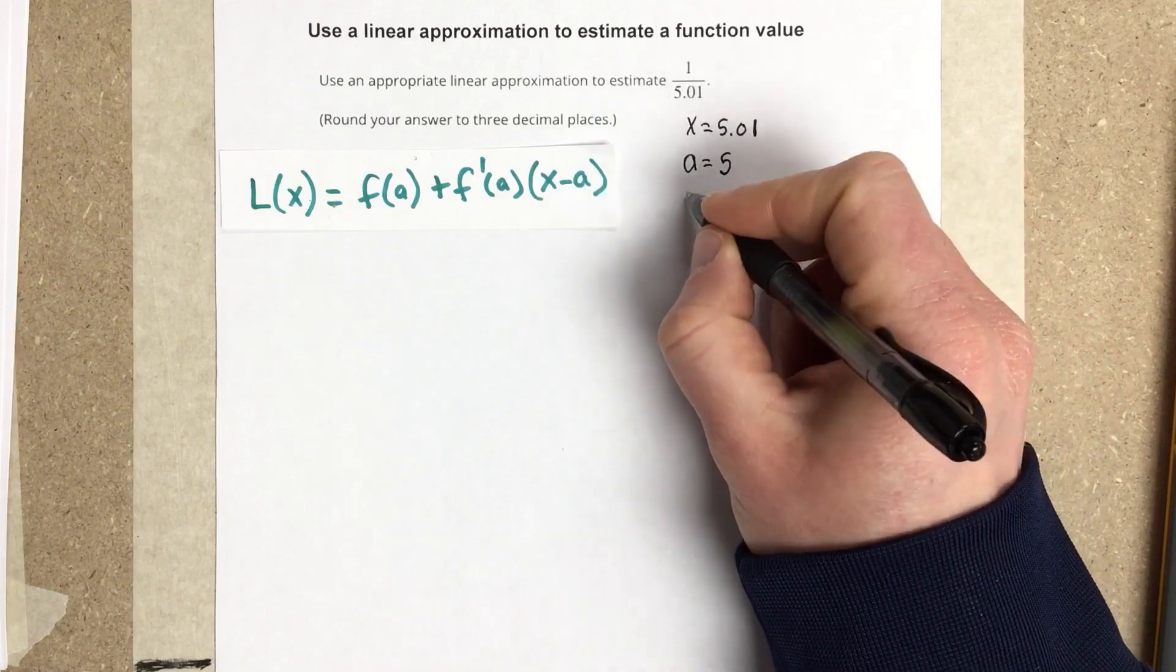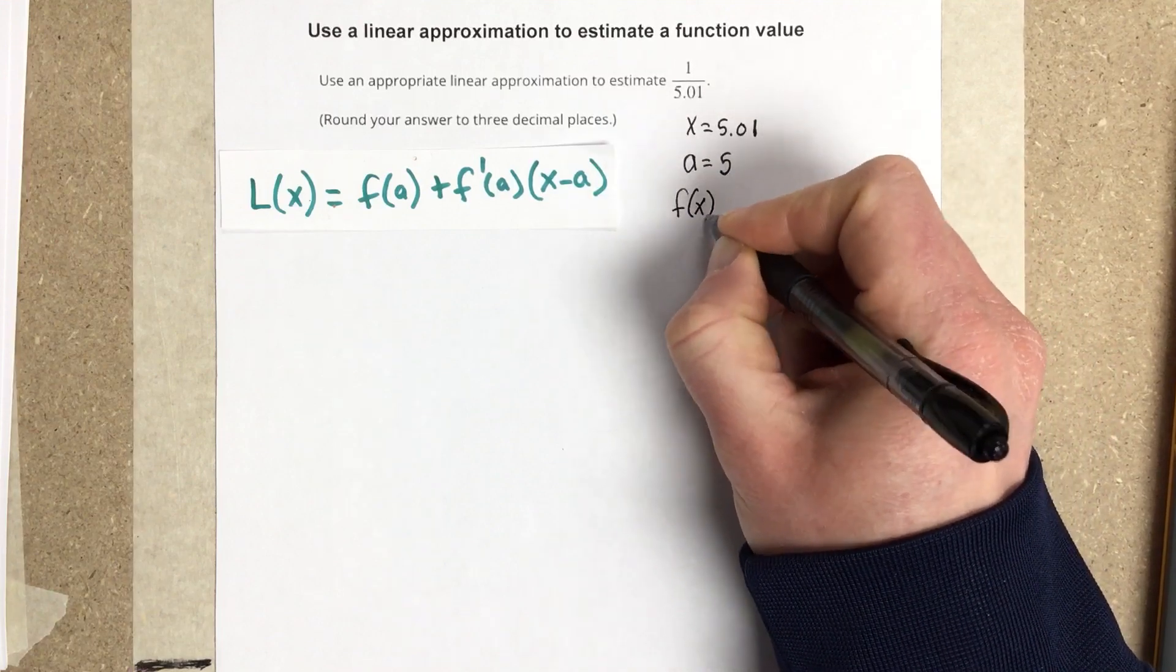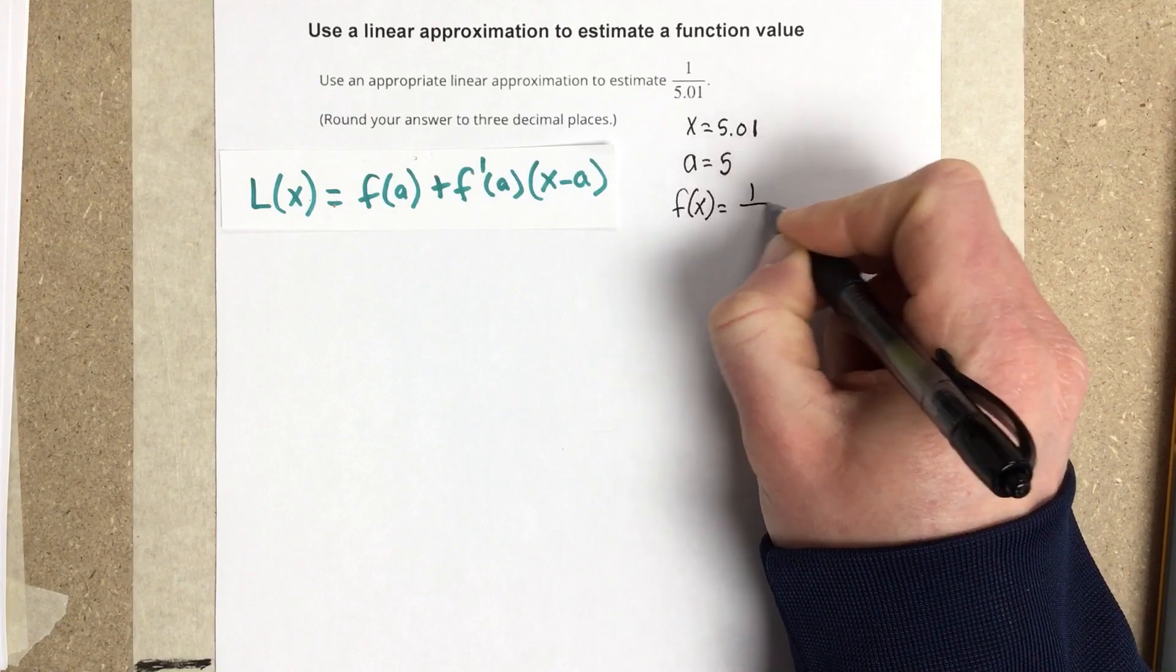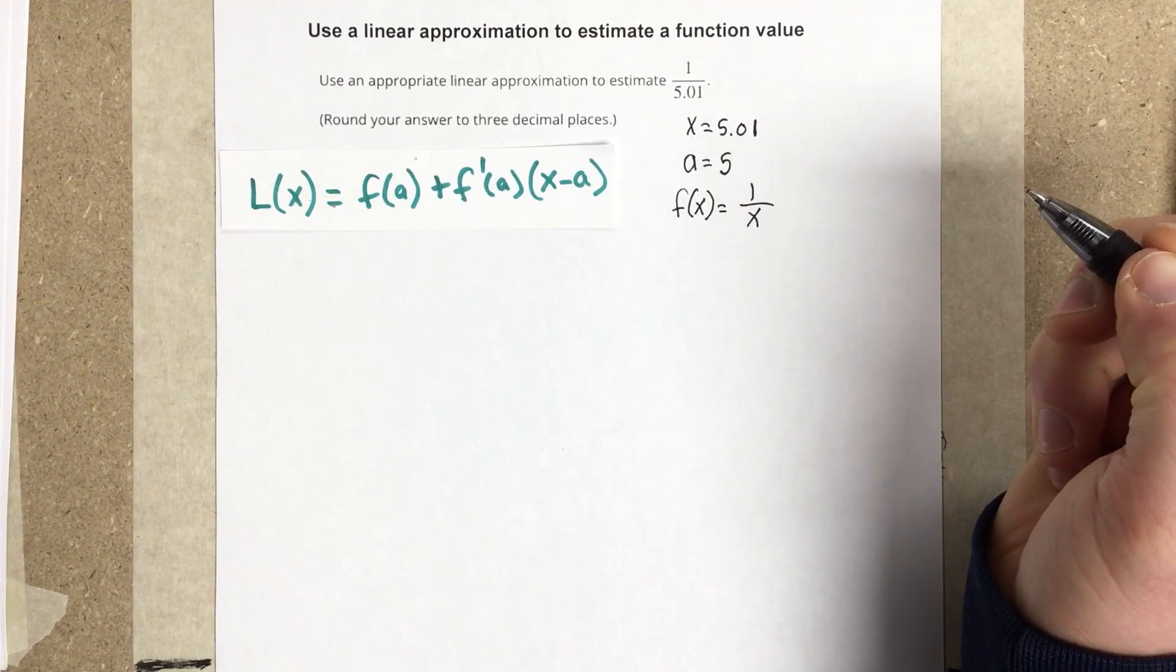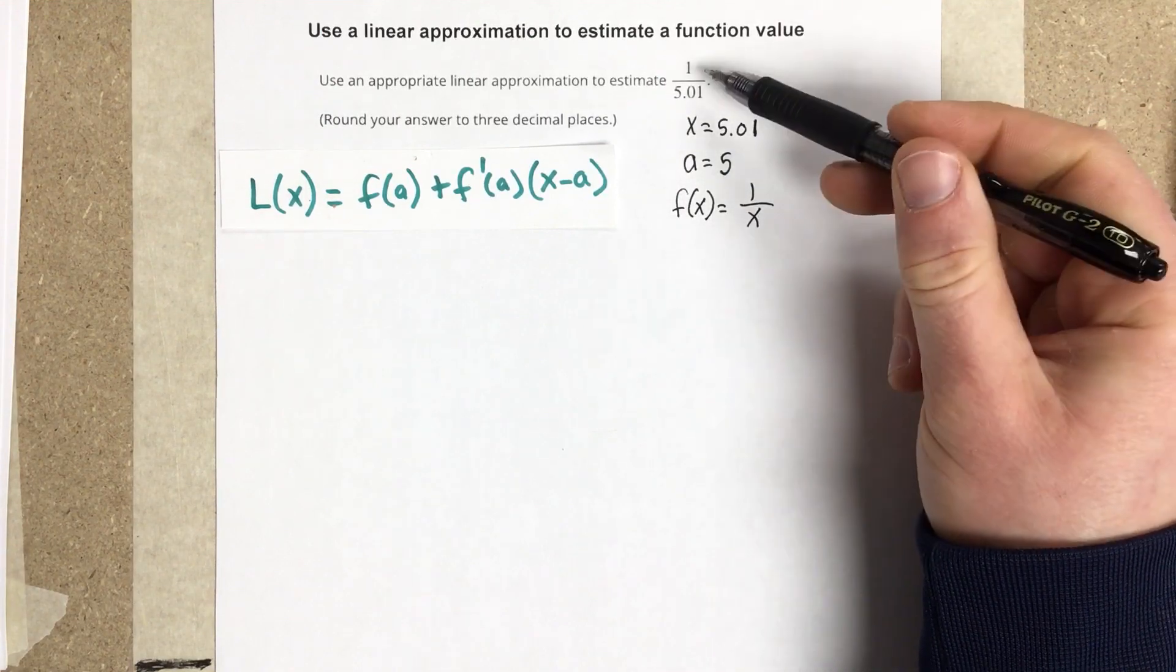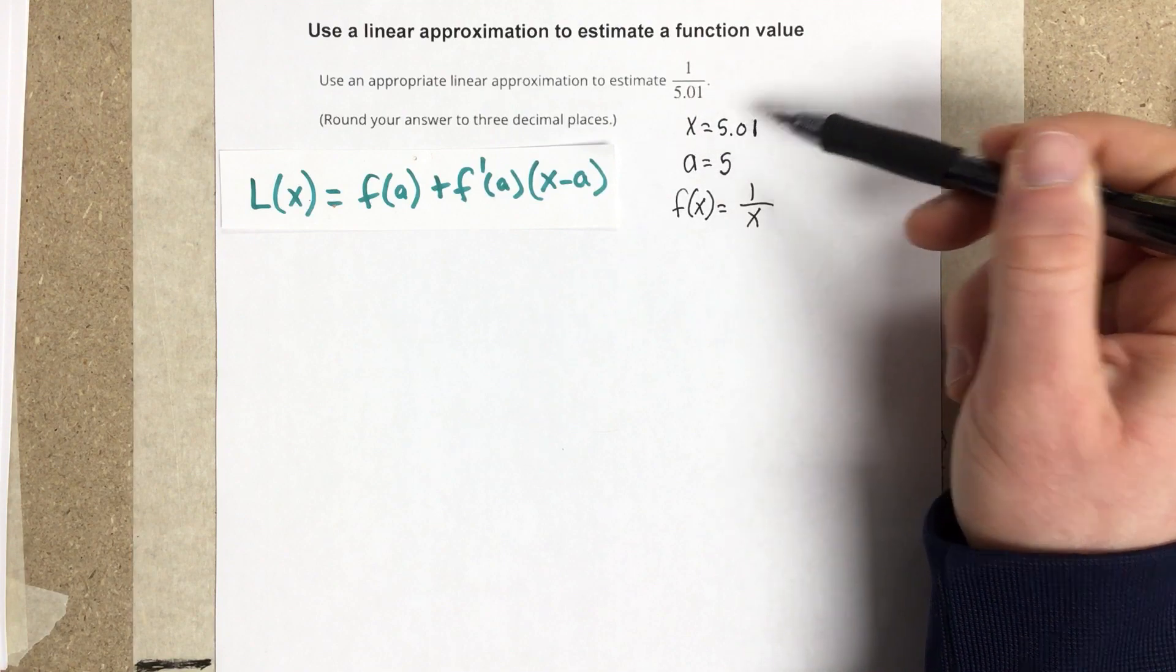So I pick a to be 5, which tells me that my function that I'm going to choose is going to be 1 over x. So I'm picking a number that's close to 1 divided by 5.01.